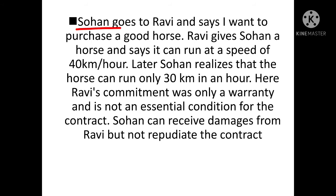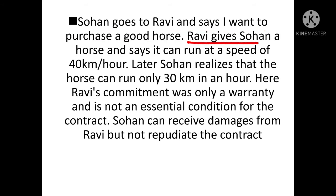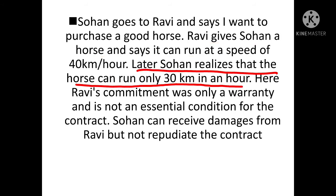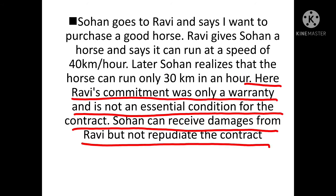Warranty का example: Sohan goes to Ravi and says 'I want to purchase a good horse।' Sohan ने कोई condition specify नहीं करी - न speed, न height। Ravi gives Sohan a horse and says it can run at a speed of 40 km per hour। Later Sohan realizes that the horse can run only 30 km per hour।